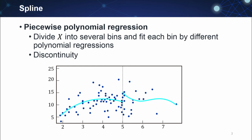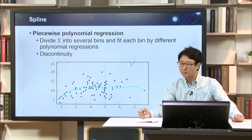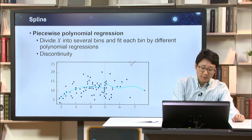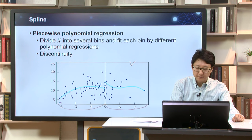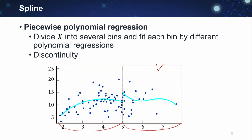So if we divide x into several bins and fit each bin by different polynomial regression, it will look like this. Some big problem. Data points of each bin — there are two bins here — each bin may fit well. However, overall fitting is a bit weird because there's a discontinuity at the cutoff point. It's not a good fitting at all overall because of this discontinuity.